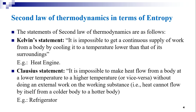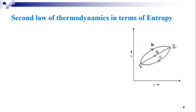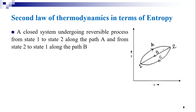An example of this is the refrigerator. In a refrigerator, external work is done using a compressor, and the heat from the substance inside the refrigerator, which is at a colder temperature, is drawn out and released to the surroundings. If a process occurs in a closed system, the entropy of the system increases for an irreversible process and remains constant for a reversible process, but it never decreases.